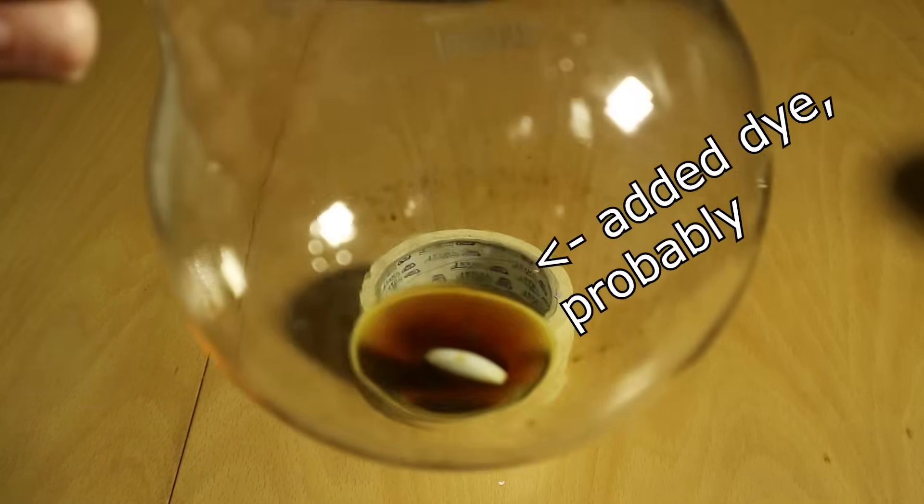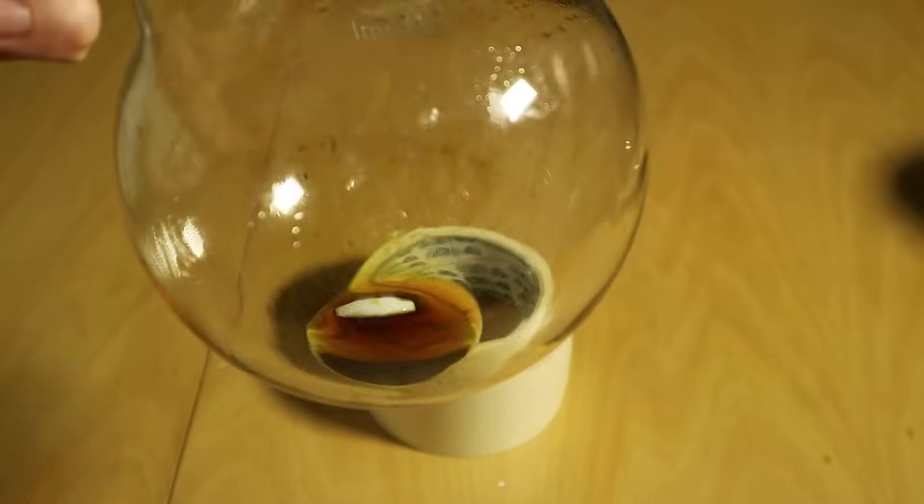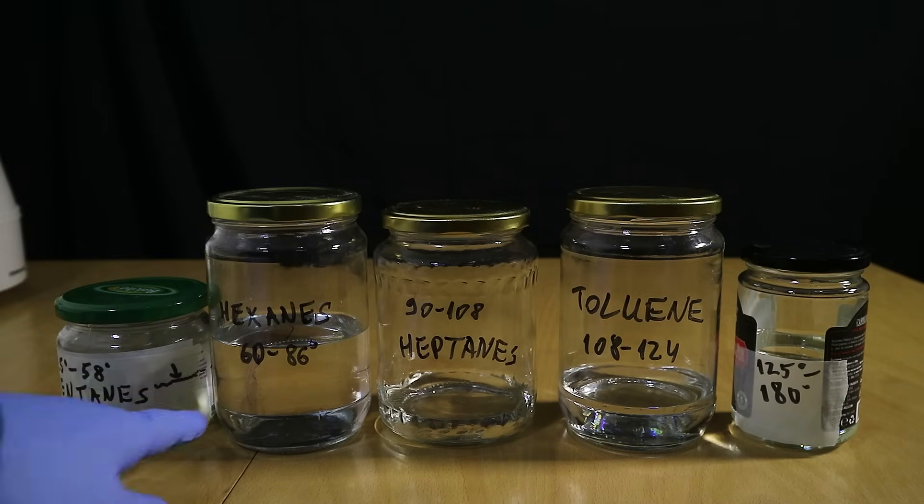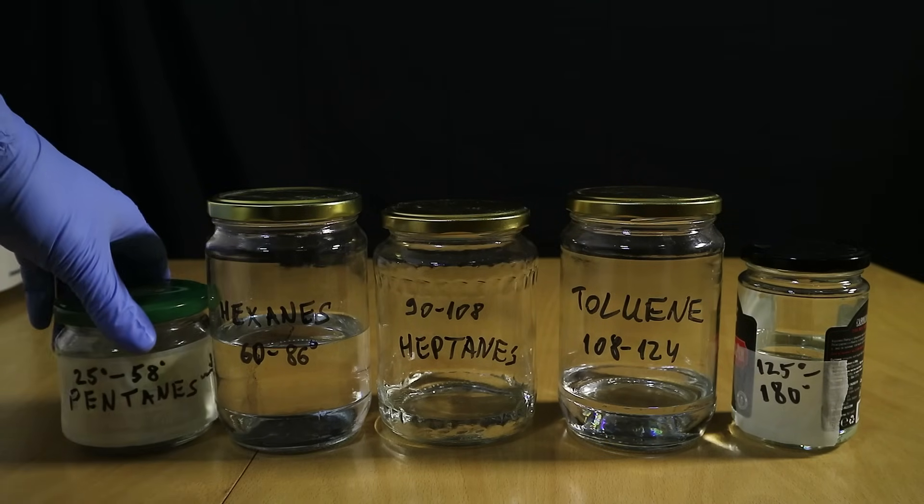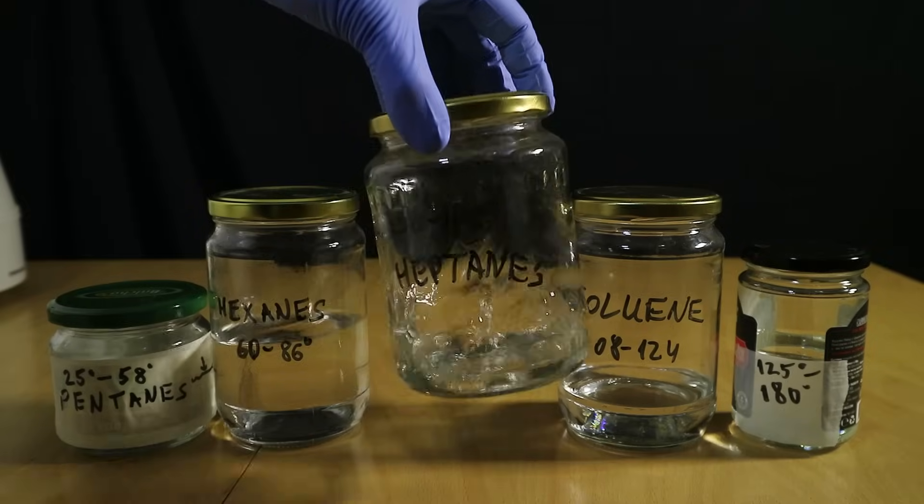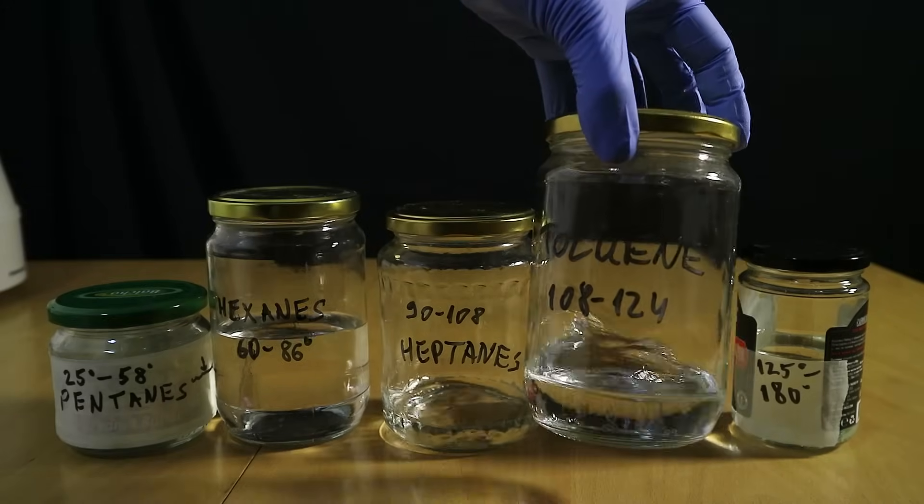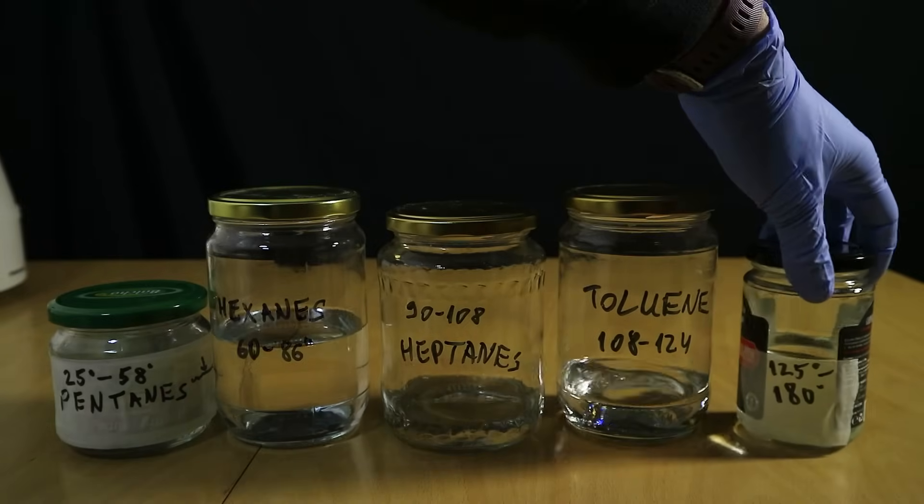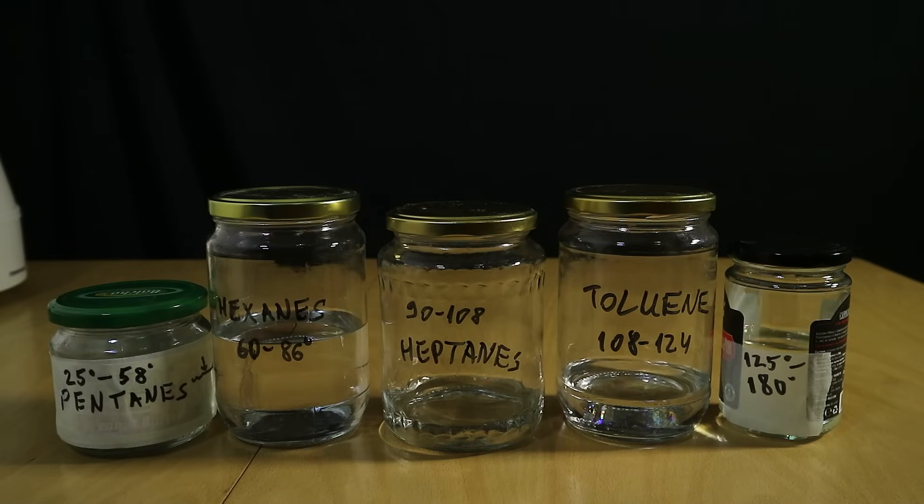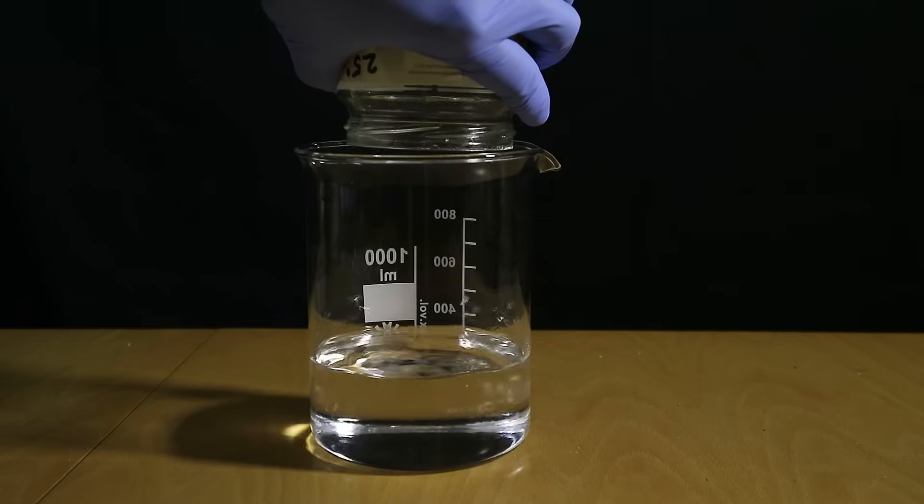With this we have all the fractions. We have separated the gasoline into fractions which are a little bit more practically usable in the sense that they have smaller temperature ranges so if you need to use it as a solvent that you can evaporate or condense over stuff it is a more practical range to work with. I wanted to use the pentanes and hexanes, the lighter fractions between like 25 and 86 degrees.